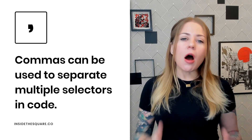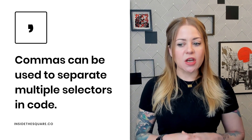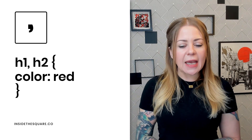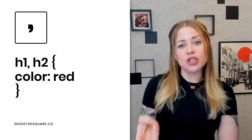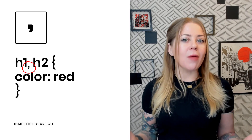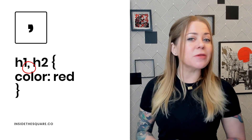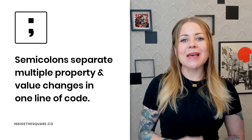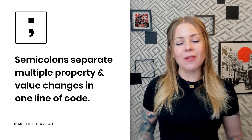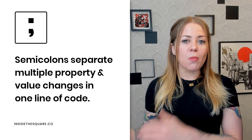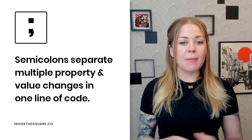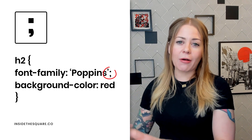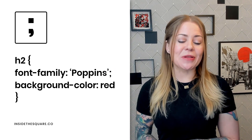Starting with the comma — commas can be used to separate multiple selectors in code, so you can apply the same change to multiple things. The example on the screen is going to change both the H1 and the H2 text colors to red. That comma separating the two is one of the most common symbols you're going to see in CSS. Another super common one is the semicolon. This one separates property and value combinations inside a line of code. If you want to change more than one thing about an H2, you'll use the semicolon to separate the font family change and the background color change.